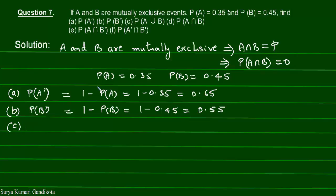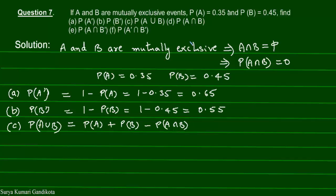Part C: we need P(A∪B). By formula, P(A∪B) = P(A) + P(B) − P(A∩B). Since A and B are mutually exclusive, P(A∩B) = 0, so we can simply say P(A∪B) = P(A) + P(B) = 0.35 + 0.45, which gives 0.80.